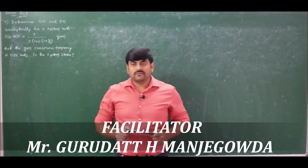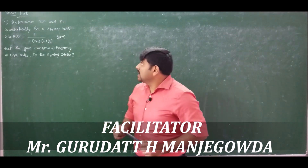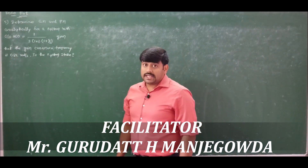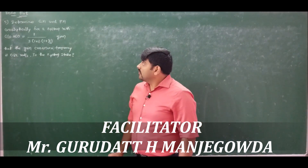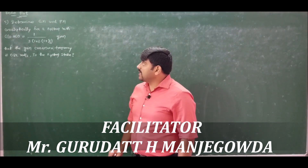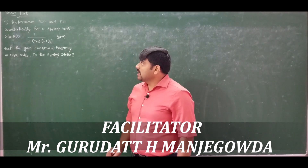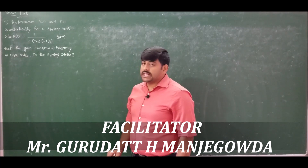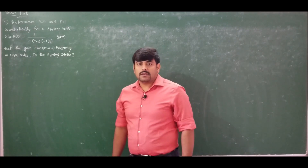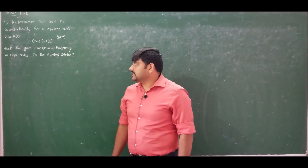Problem number five states: determine the gain margin and phase margin analytically for a system with G(s)·H(s) = 1 / [s(s+1)(s + 1/2)], given that the gain crossover frequency is 0.82 radians per second. Is the system stable?